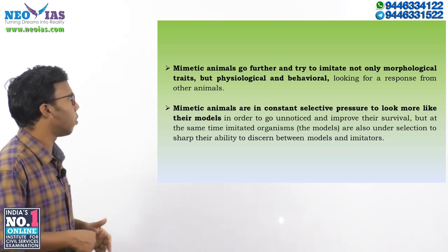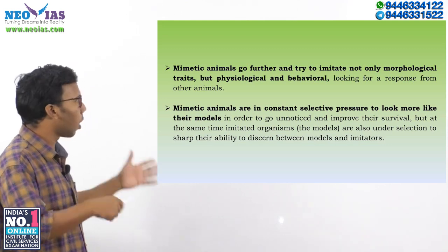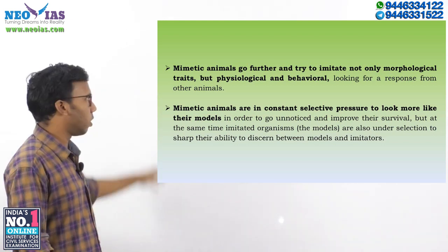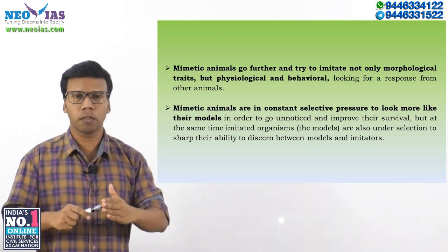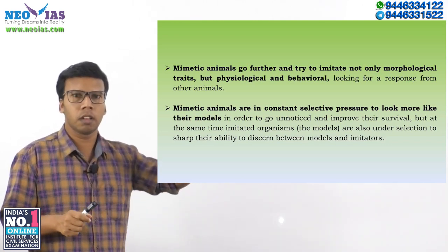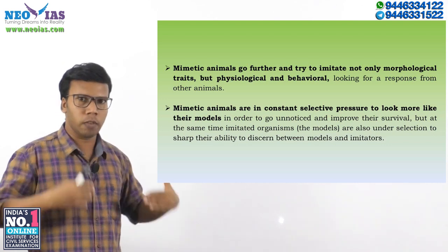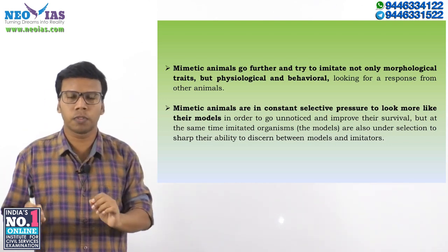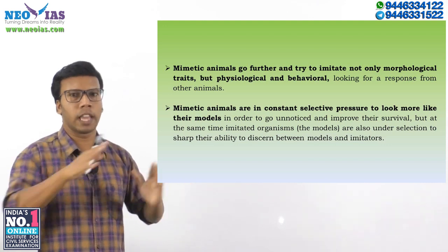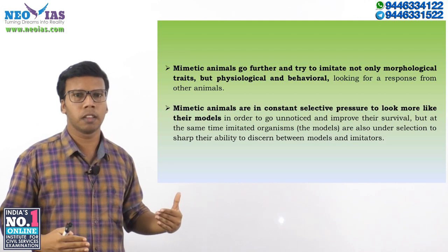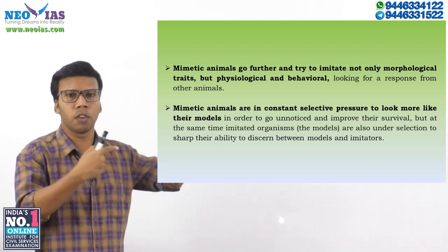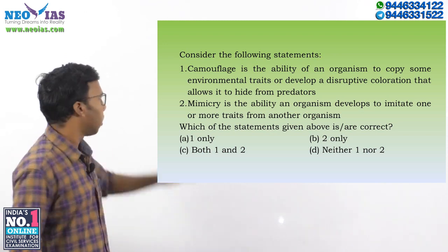Mimetic animals are under constant selective pressure to look more like their models in order to go unnoticed and improve their survival. At the same time, the imitated organisms are also under selection to sharpen their ability to discern between model and imitator. One more important point: don't think that mimetic animals are copying the other organism only at the moment of need. Throughout their entire lifespan, mimetic animals maintain the same appearance as the model animal — that is why we say it is part of the evolutionary process.